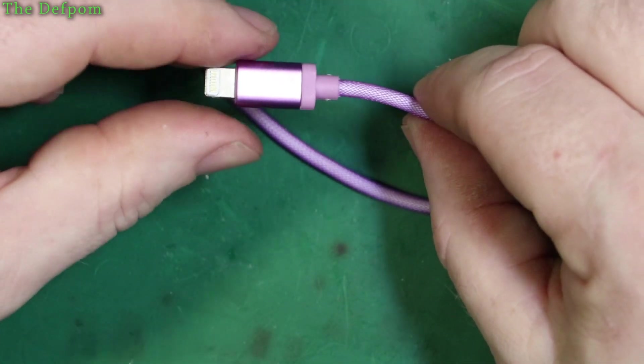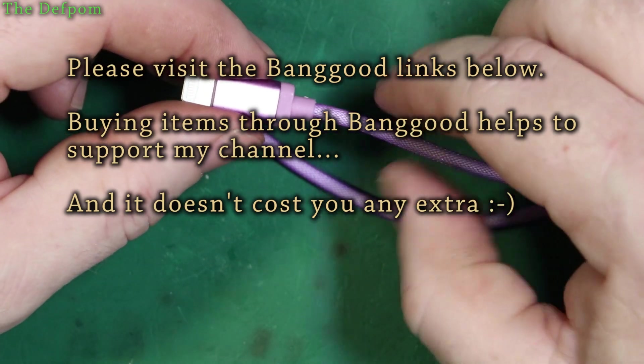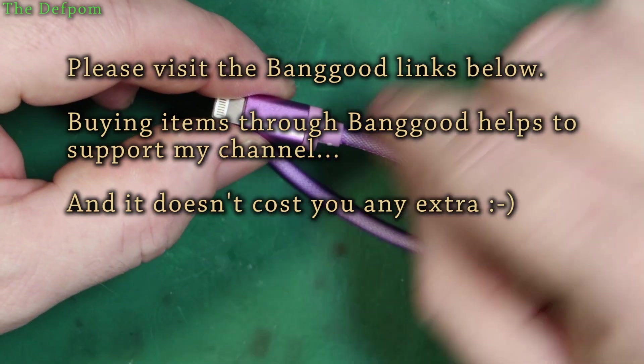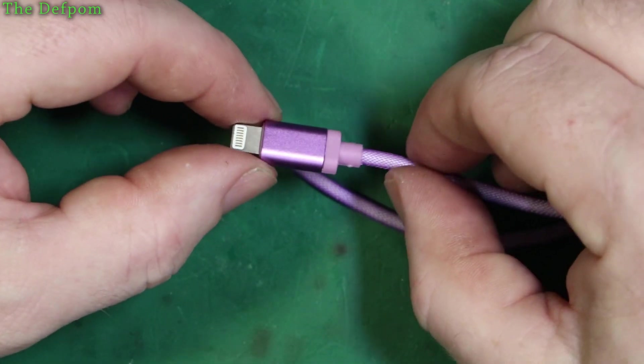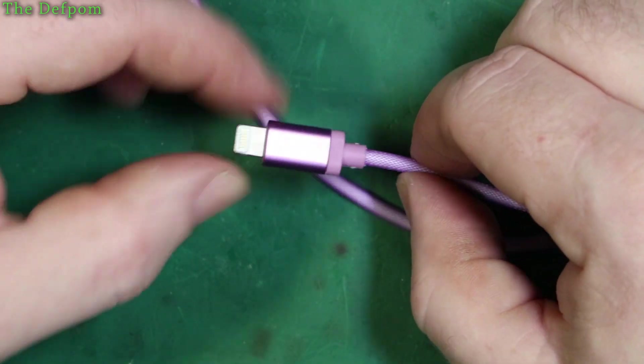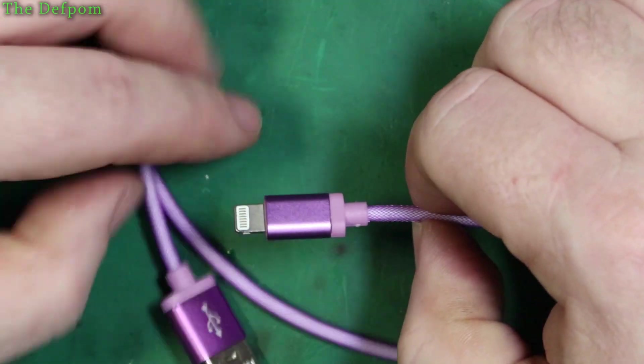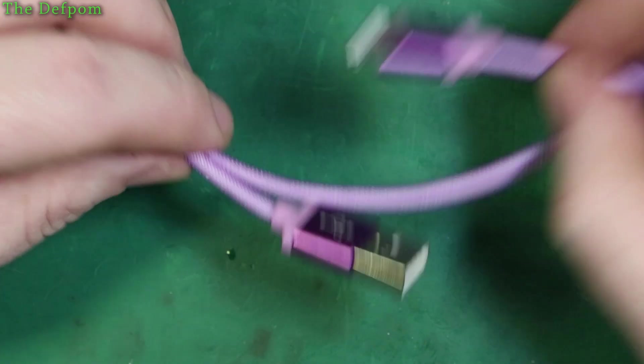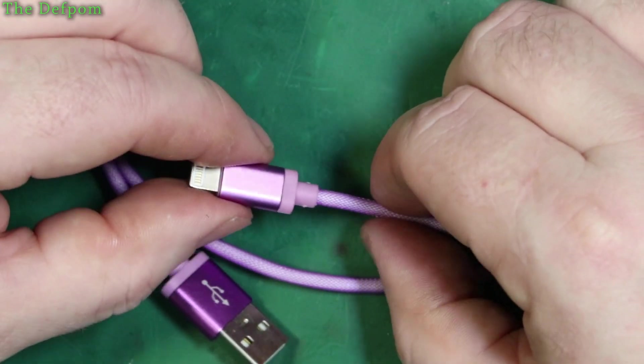It does feel a bit weak at that point, so my suspicions are that's what's wrong. I might just be able to take all this apart, cut the cable back and reattach it onto the connector and maybe have it work. But right now it works some of the time, not all of it. And the color is because it's my wife's one - she likes purple.